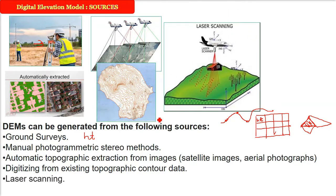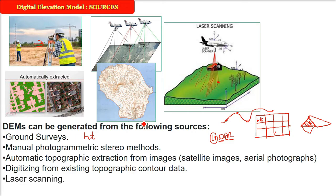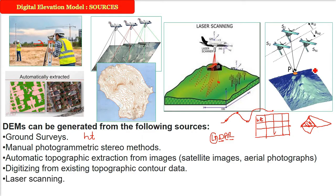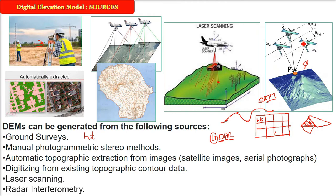Then we have laser scanning, which comes from LiDAR — Light Detection and Ranging. This laser scanning is done using an aircraft which carries a laser. The laser pulses go out and reflect back from the ground at different points, giving us the proper shape and height, from which we can build a geographical model. The final and very important source is radar interferometry — for example, SRTM data, the Shuttle Radar Topography Mission. The difference in phase between different radar waves gives the height between two points, and this height can be used to make a DEM.